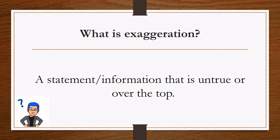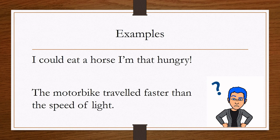What is exaggeration? A statement or information that is untrue or over the top. Examples of exaggeration: 'I could eat a horse, I'm that hungry' and 'the motorbike traveled faster than the speed of light.'